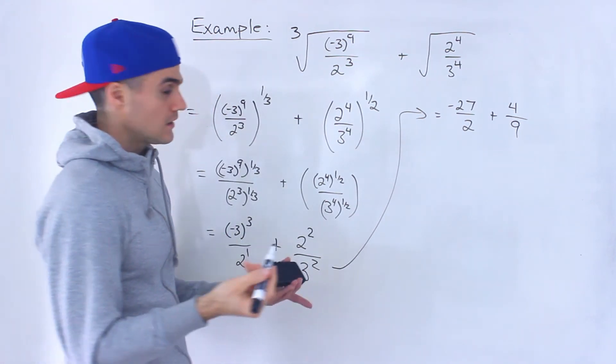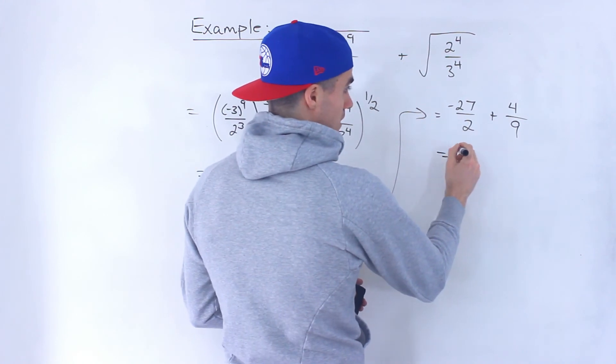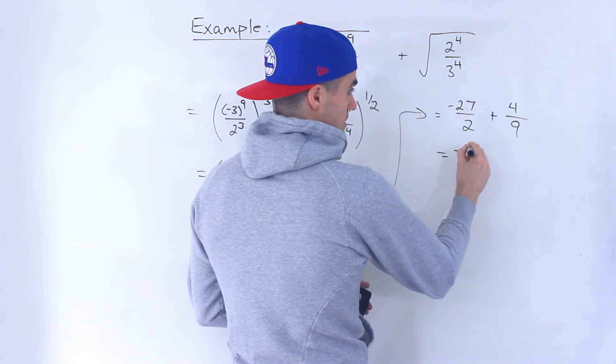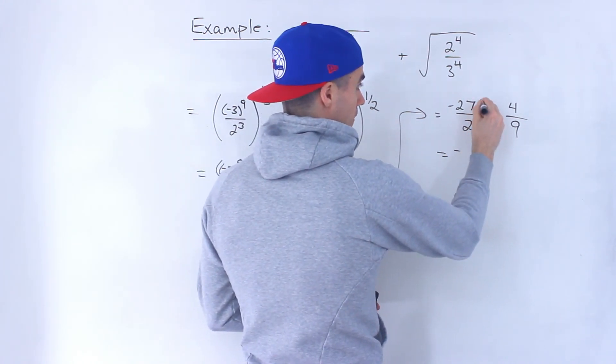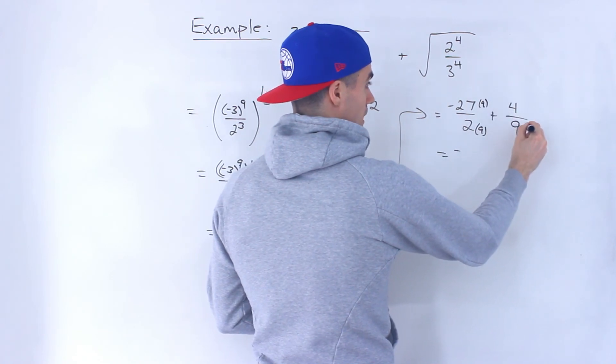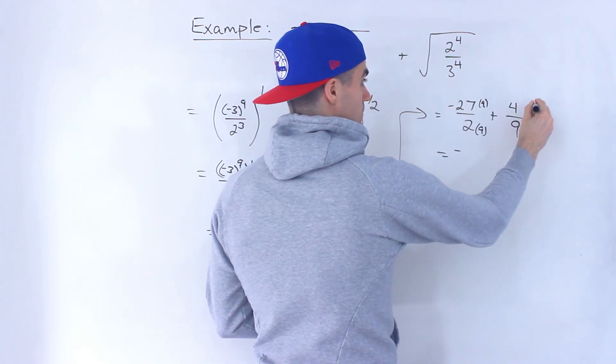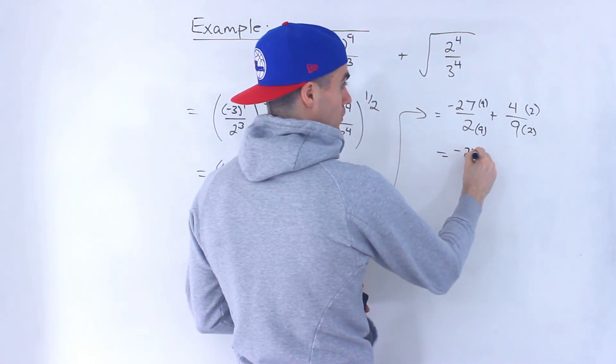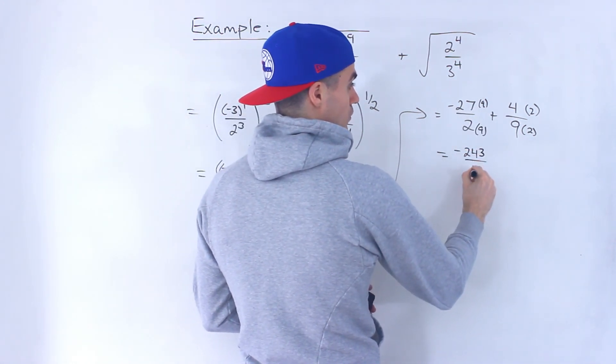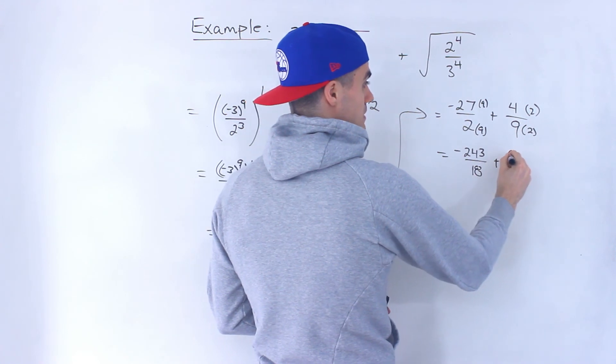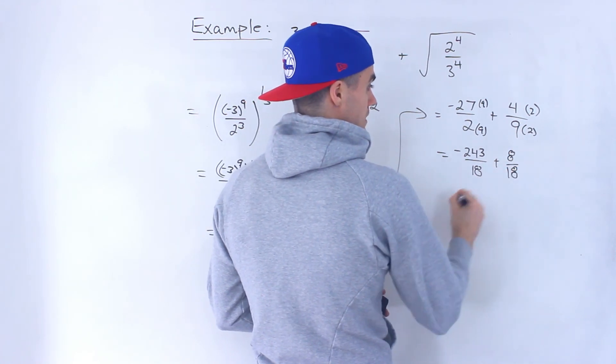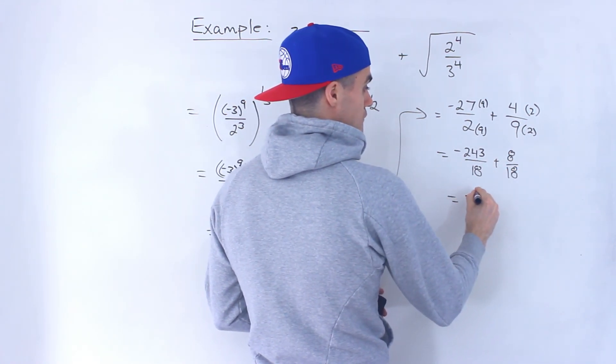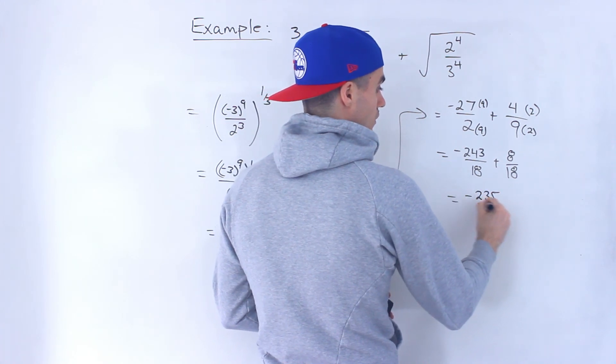From here, notice we can just add these. We multiply this by 9, this by 9, multiply this by 2, this by 2 - get a common denominator. Negative 27 times 9 gives us negative 243 over 18 plus 8 over 18, which gives us negative 235 over 18.